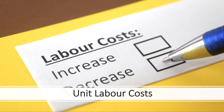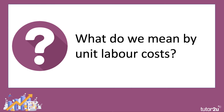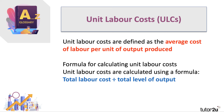Welcome to a macro video. In this video we're going to spend a few minutes looking at the important concept of unit labour costs, which for many economists are an important measure of international competitiveness. Unit labour costs, or ULCs for short, are defined as the average cost of labour per unit of output produced — whether you're producing textiles or motor cars. The formula is simply total labour cost divided by total level of output.